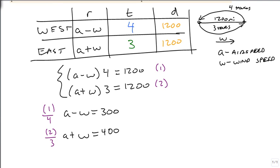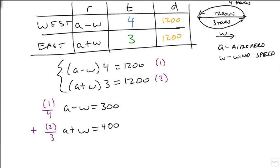Now notice that all we have to do is add these together, and we'll get 2A because A plus A is 2A. Minus W plus W is eliminated. 300 plus 400 is 700. We divide by 2, and A is 350. So our airplane is flying at 350 miles per hour with no effect from the wind.